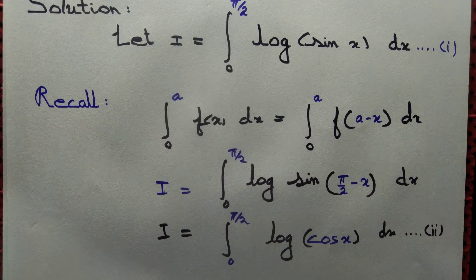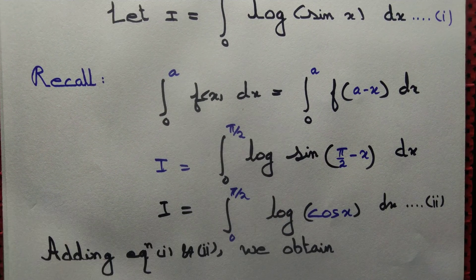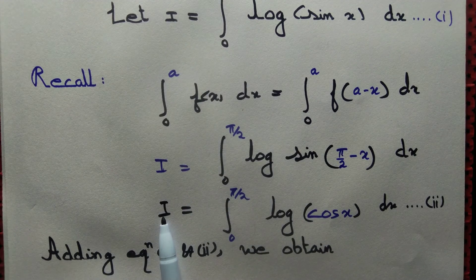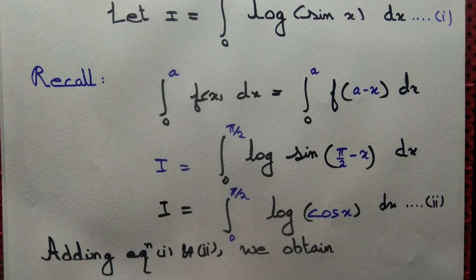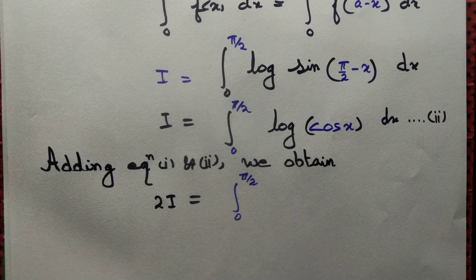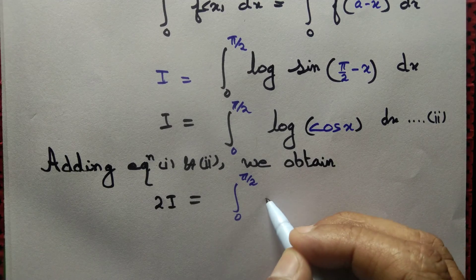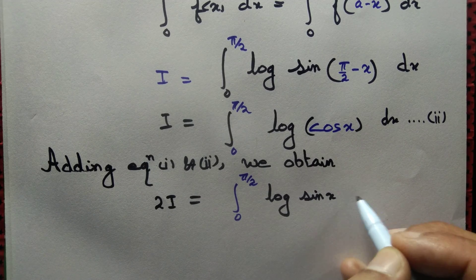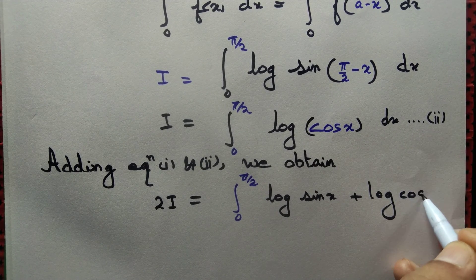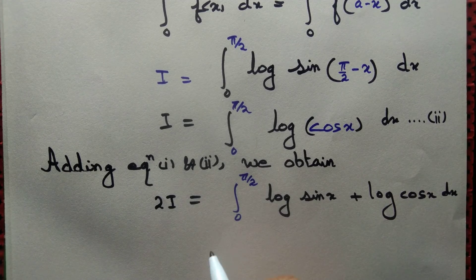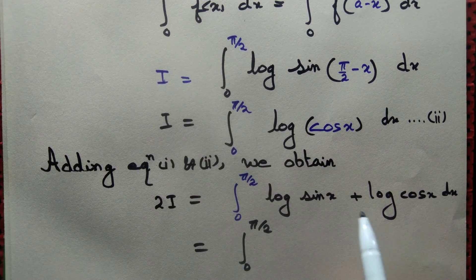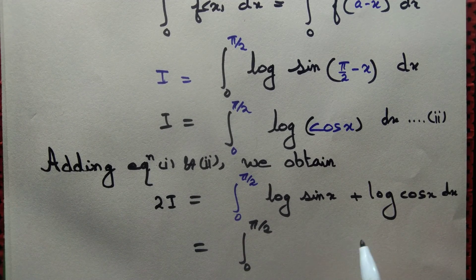Adding equation 1 and equation 2: the left-hand side of equation 1 has i, and the left-hand side of equation 2 has i, so i + i = 2i. On the right-hand side we get the integral from 0 to π/2 of log(sin x) + log(cos x) dx. Now, using the logarithm property log(u) + log(v) = log(uv), we combine the logs.